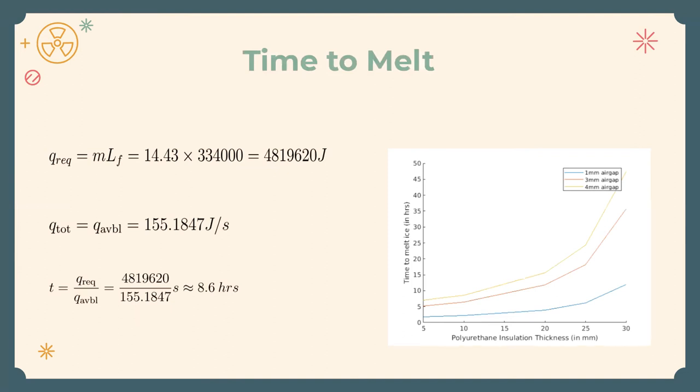Then recognizing the fact that 14.23 kg of ice was formed and the value of the latent heat of fusion, we calculate the total time required for ice to melt, which is about 8.6 hours. The graph that is plotted here gives the time to melt for various values of polyurethane thickness and air gap.